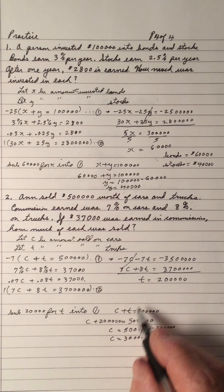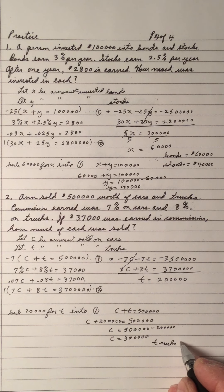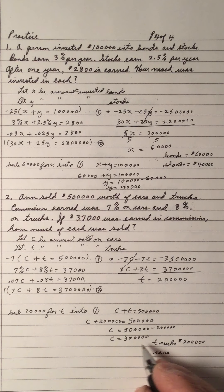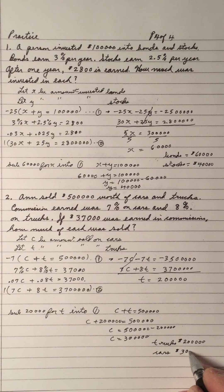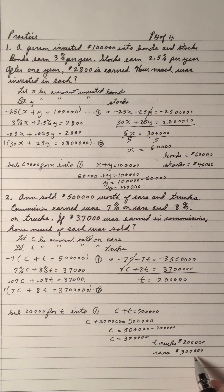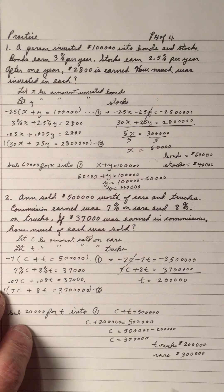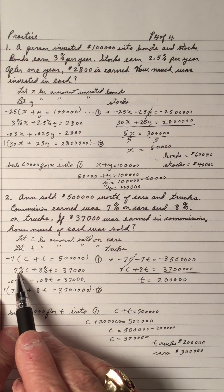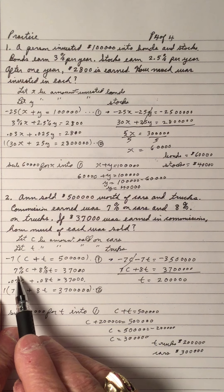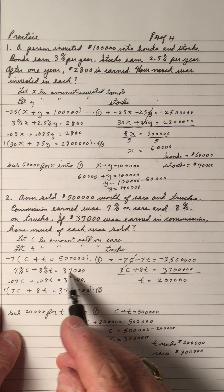Trucks (T) = $200,000 and cars (C) = $300,000. To check: 8% × 200,000 + 7% × 300,000 should equal $37,000. That's how interest and commission problems work — the percentage is applied to each amount and the results add up to give the total interest or commission.